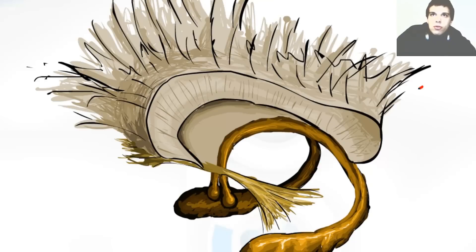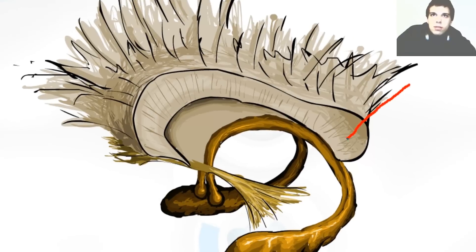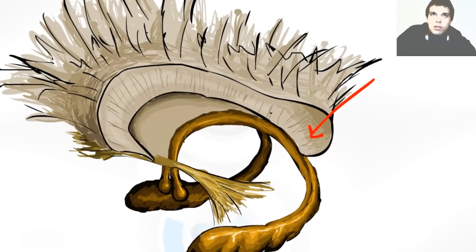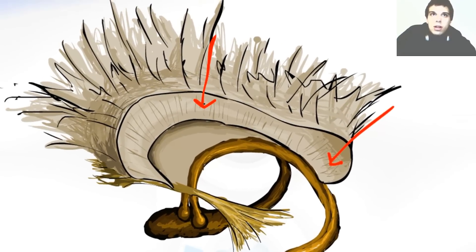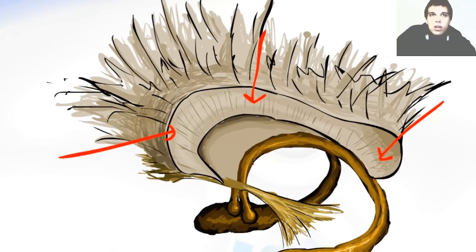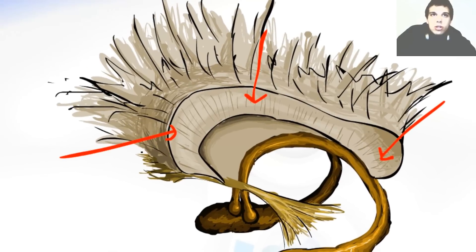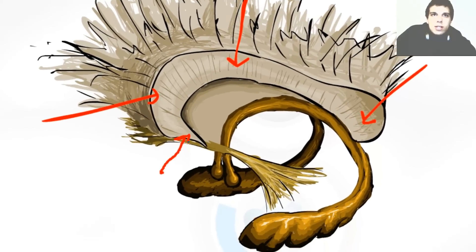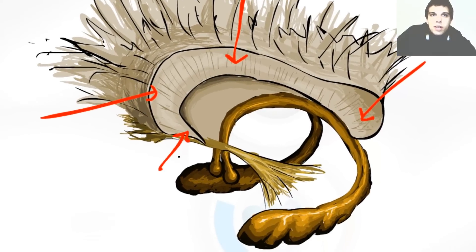The posterior portion of the corpus callosum is the splenium. The middle portion is the body. The most anterior part of the corpus callosum is called the genu — it means the knee. This part that projects inferior and posterior is called the rostrum.